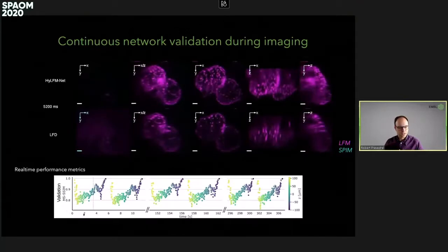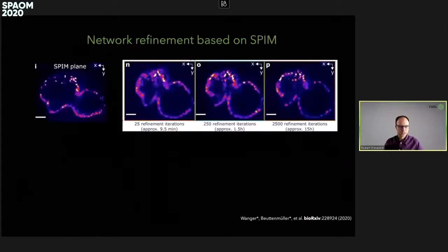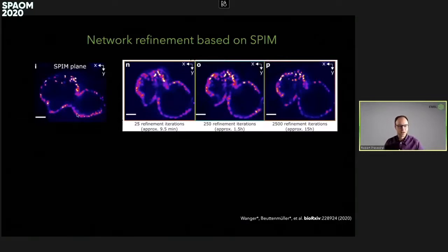Over several minutes of recording, the light sheet sweeps through the volume. We have poorer resolution in image planes further away from the objective, but we can always check over time how well the reconstruction is performing. At some points we can step in and say the reconstruction is not good enough, and then use the SPIM data to refine our networks.